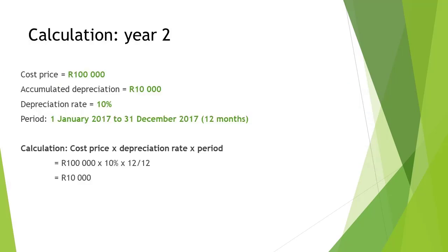In order to calculate the depreciation on the vehicle for the second year, you will need to use the following: the cost price, depreciation rate, and the period. In our example, the cost price is given as 100,000 Rand, the depreciation rate is given as 10%, and the period is 1 January 2017 to 31 December 2017, thus 12 months.